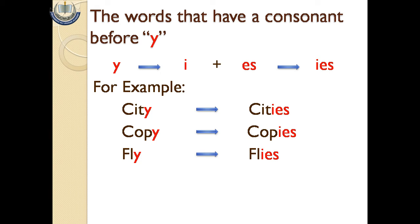Agar koi word 'y' pe end ho raha ho aur 'y' se pehle koi consonant aa jaye, to hum 'y' ko 'i' mein change karte hain, then 'es' add kar ke uski plural form banate hain. Here consonant means wo letters jo vowels ke ilawa hote hain.